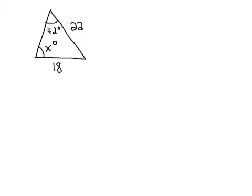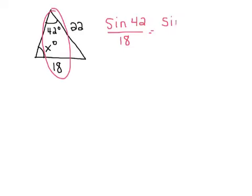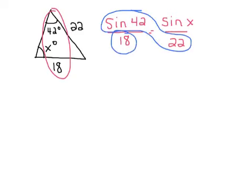I still have my one completed pair — the 42 across from the 18. So I can still start with sine 42 over 18. What would my other fraction look like? X is the angle measure. So I'm going to say sine of X over 22. It's still not that hard — there's just one extra step at the end. I'm still going to cross multiply and divide: 22 times sine of 42, divide by 18.